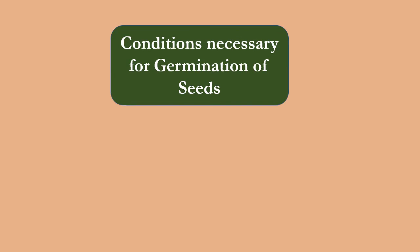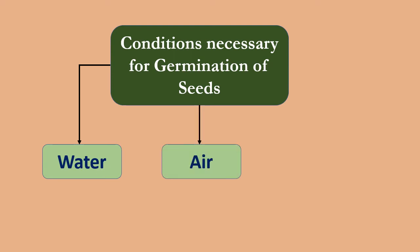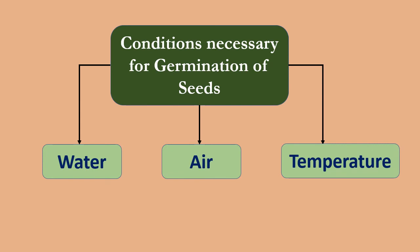Conditions necessary for germination of seeds. First is water: it softens the seed coat, causing it to burst open; then the radicle grows downward to form the primary root and the plumule grows upward to form the shoot; water is also necessary for chemical reactions. Next is air: seeds require energy for proper growth, which comes from respiration, so oxygen is required. Next is temperature: seeds require an optimum temperature for growth. The favorable temperature for germination is 35°C to 40°C. Below 0°C and above 40°C, seeds do not germinate.